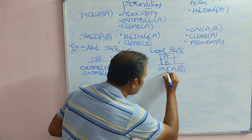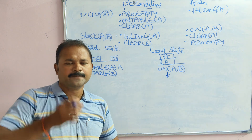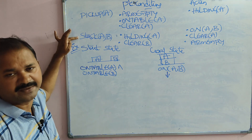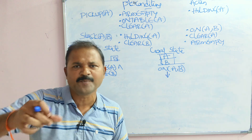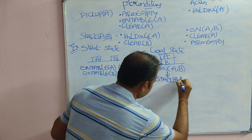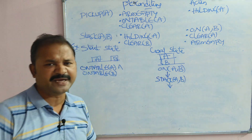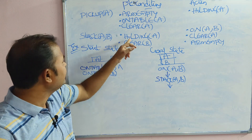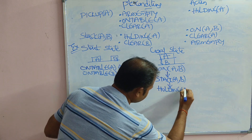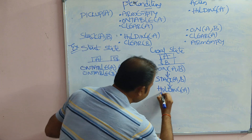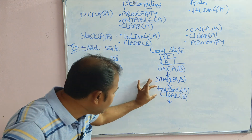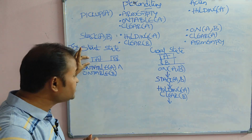To achieve on(A, B) — placing block A on block B — we use the rule stack(A, B). For stack(A, B) the preconditions are holding(A) and clear(B). We must check whether these preconditions are satisfied in the start state. Holding(A): the robot arm is empty and A is on the table, so this is not satisfied. Clear(B): there are no blocks on top of B, so this is satisfied. Since holding(A) is not satisfied, we must satisfy it next.